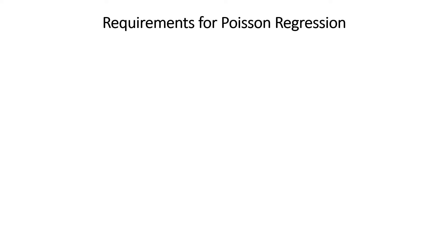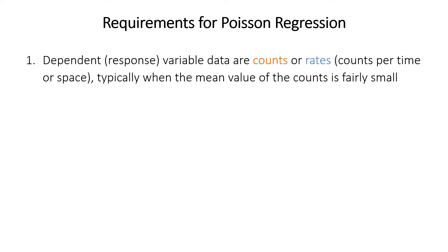When would you use Poisson regression? You should choose it when your dependent variable includes counts or rates — which are counts per time or counts per space. You particularly use it when the counts are close to zero or span a small range. If your counts are not close to zero and span a really large range, they may be almost quasi-continuous and you might get away with linear regression, but really if you have counts you should think about Poisson regression.